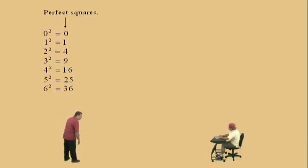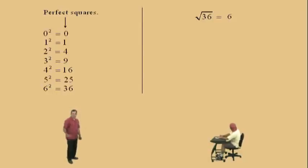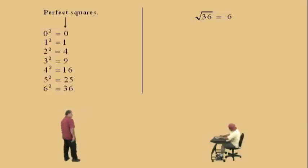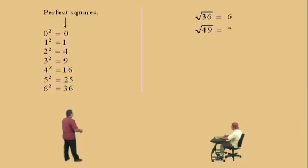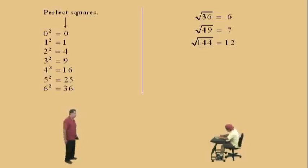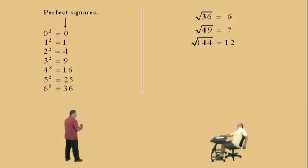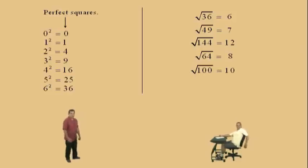All right, Charlie, let's do some problems. What is the square root of 36, Charlie? 6 — because 6 squared is 36. Remember, square roots, we always give positive answers — the principal root. How about the square root of 49? 7, because 7 squared is 49. What's the square root of 144? 12, because 12 squared is 144. We're dealing with perfect squares here. What's the square root of 64? 8, because 8 times 8 is 64. What's the square root of 100? 10, because 10 squared is 100.